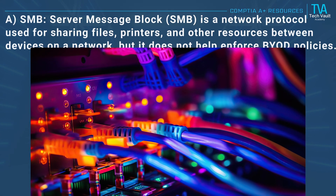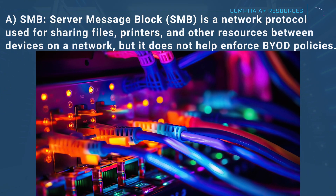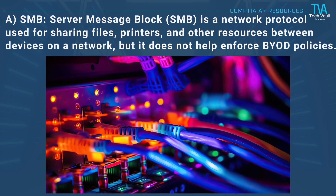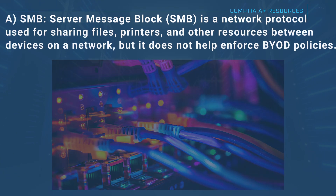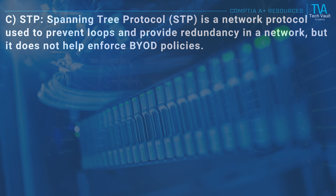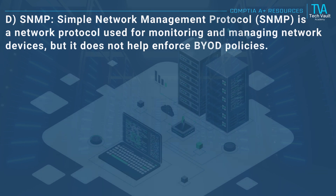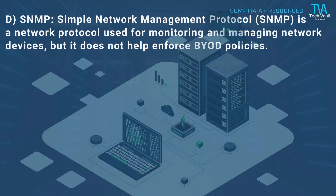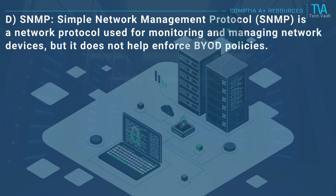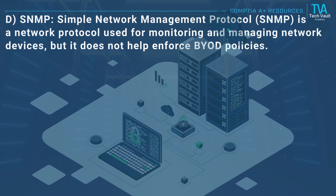A, SMB: server message block is a network protocol used for sharing files, printers, and other resources between devices on a network, but it does not help enforce BYOD policies. C, STP: spanning tree protocol is a network protocol used to prevent loops and provide redundancy in a network, but it does not help enforce BYOD policies. D, SNMP: simple network management protocol is used for monitoring and managing network devices, but it does not help enforce BYOD policies.